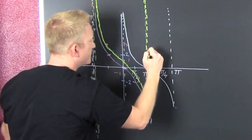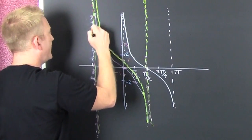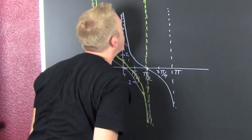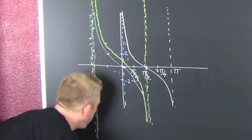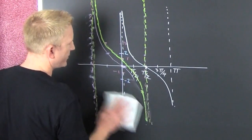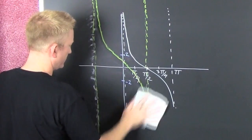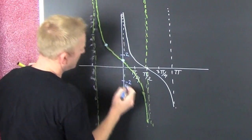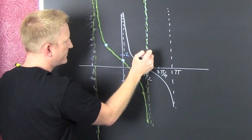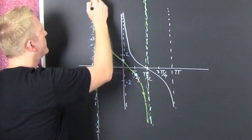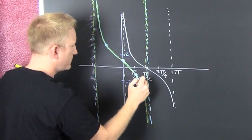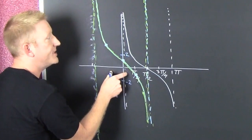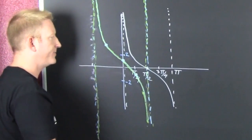Getting my asymptotes in there. Trying to get rid of all my construction marks so I can get a better idea of the final product. So I took my original cotangent and shifted it pi over two to the left, then shifted it up one. This green graph is the final result.